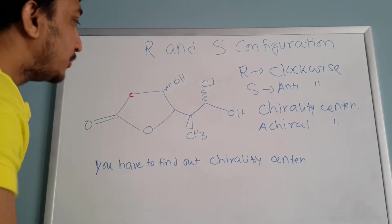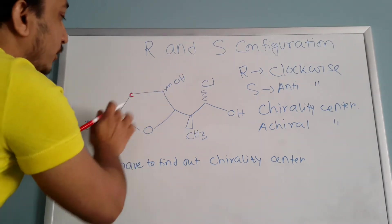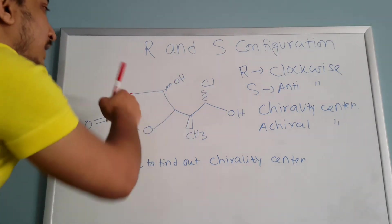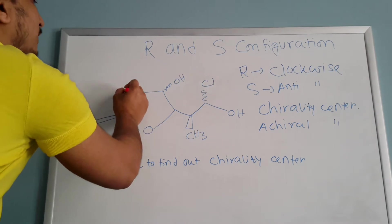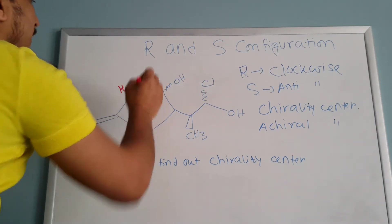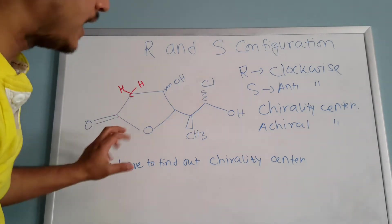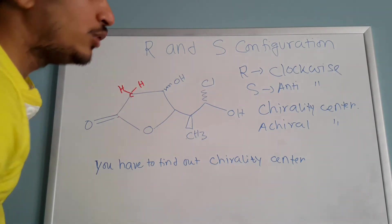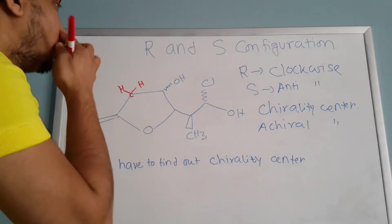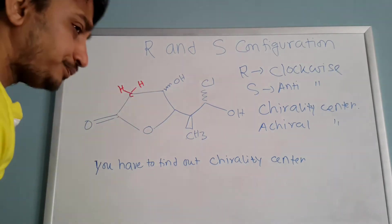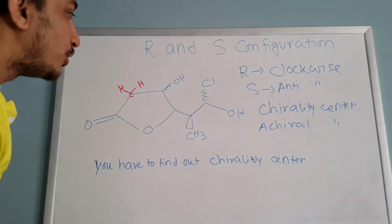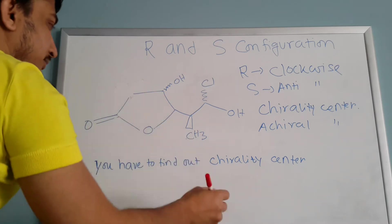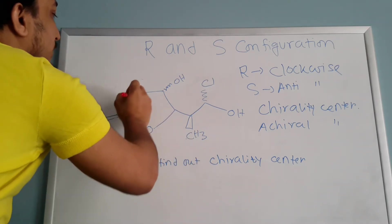Let's talk about this carbon. This carbon has one bond and two bonds that are different, but this is a bond-line formula, so you know this carbon is filled up with hydrogen. This carbon is filled up with two hydrogens, and that means there is no chirality center — because this hydrogen and that hydrogen are the same, so same kind of bond means no chirality center.